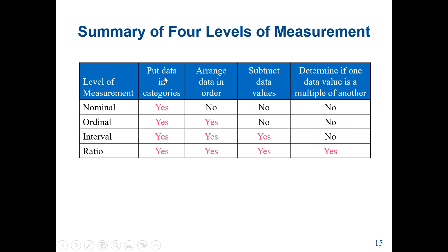With interval data, we can put data in a category, arrange it in order, and subtract data values, but we cannot form ratios. Ratio level can do everything. So from nominal, we can only put data in categories; ordinal adds arranging in order; interval adds subtracting values; and ratio can do everything, including multiplication and division.